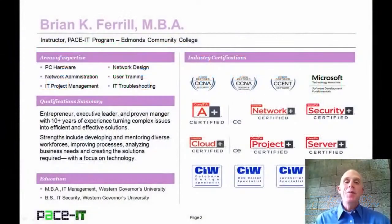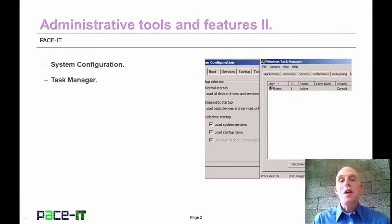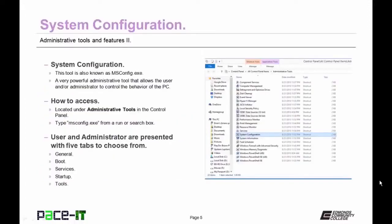Hello, I'm Brian Farrell, and welcome to Pace IT's session on Administrative Tools and Features, Part 2. Today we're going to talk about System Configuration and Task Manager. The System Configuration Tool, also known as msconfig.exe, is a very powerful tool that allows the administrator to control the behavior of a PC. It's located under Administrative Tools in the Control Panel, or you can type msconfig.exe from a run or search box.